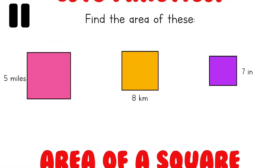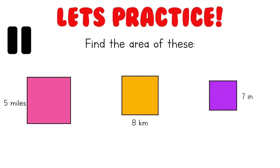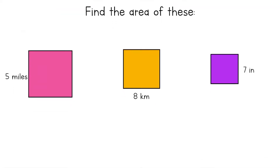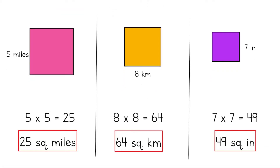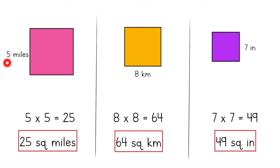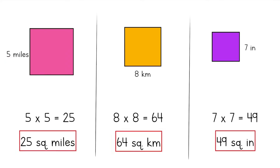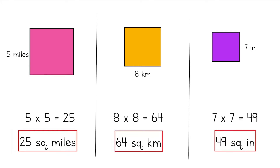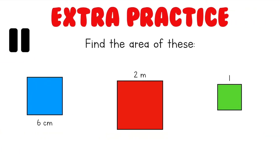Why don't you try a few on your own now? Don't forget to pause before I reveal the answers. Here are the answers for these squares. I multiplied the side length by itself, like 5 times 5 for the first square, and then I attached the proper units. Since the pink square was given to me in miles, my answer was in square miles. I'm sure you did amazing — let's do a few more practice problems to solidify your new skill.